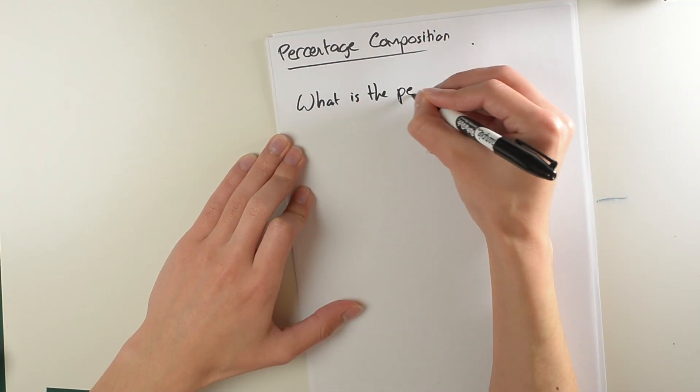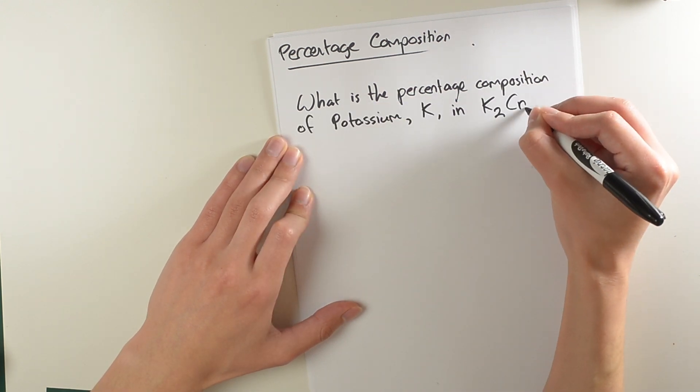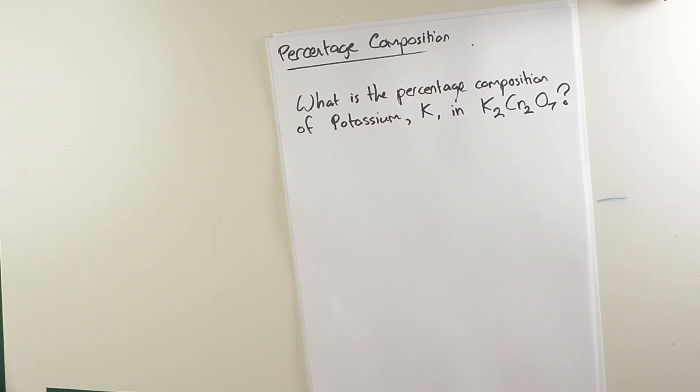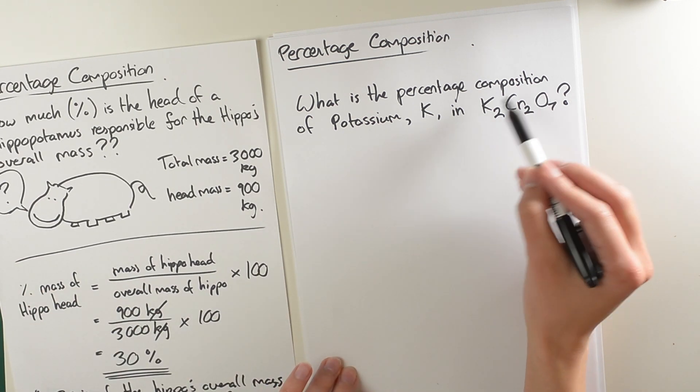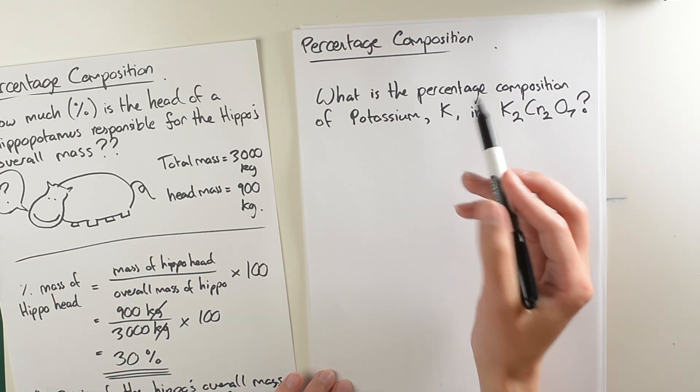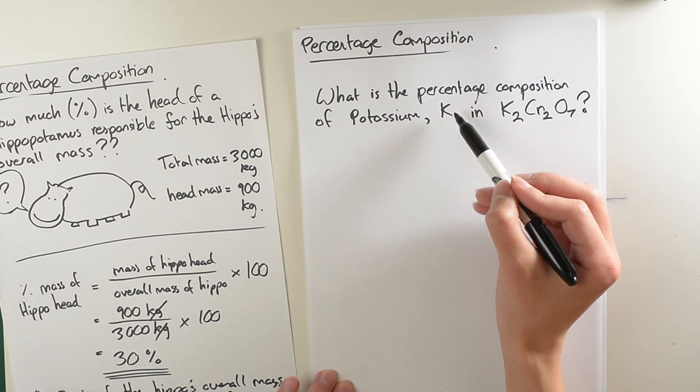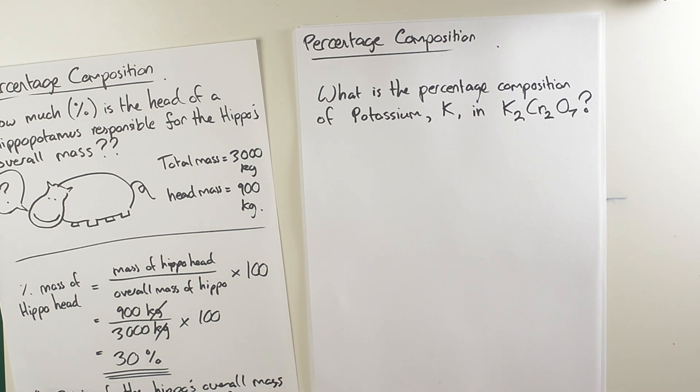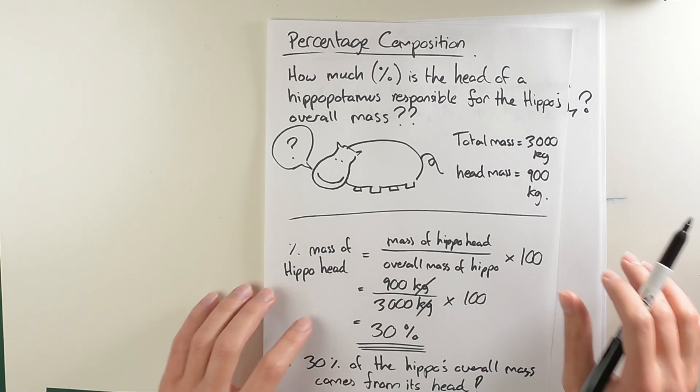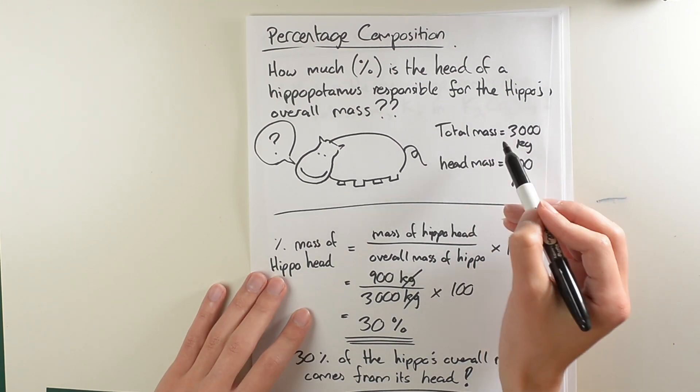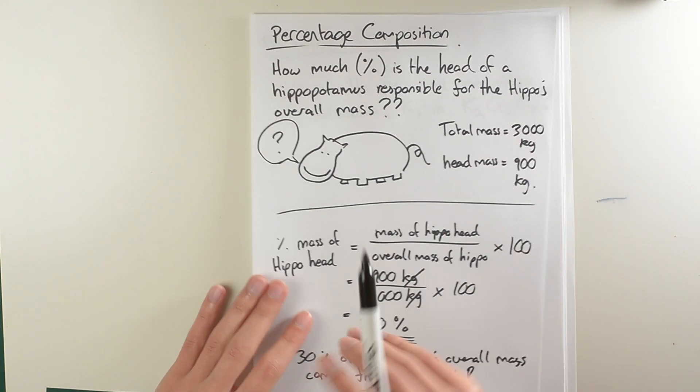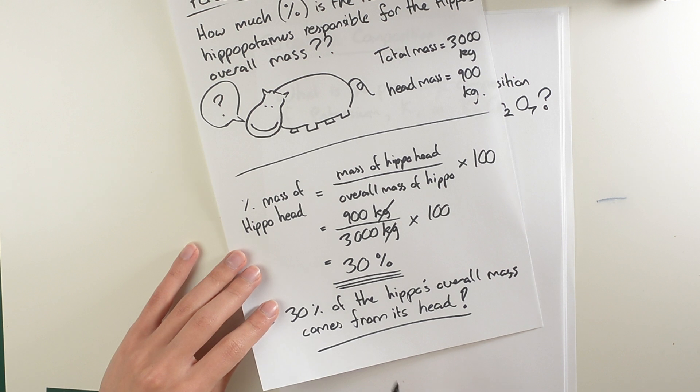Now that you get the idea, let's apply this to a chemistry example. What is the percentage composition of potassium in potassium dichromate? To do this calculation we need to figure out the mass of the potassium dichromate as well as the mass of the potassium in that molecule. Once we know these two values we can then just do the same substitution as we did before in the hippopotamus example, where we put them into the fraction and multiply it by 100.